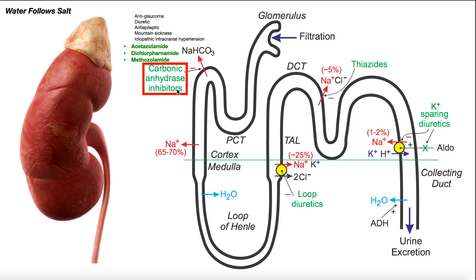The first class of drugs we'll look at are the carbonic anhydrase inhibitors — drugs that inhibit the enzyme carbonic anhydrase. Carbonic anhydrase ultimately allows bicarbonate to be reabsorbed into the blood. If you see one of these arrows moving from within the tubule out, that means that substance is being reabsorbed from the tubule into the blood and won't be excreted. Normally, carbonic anhydrase allows the reabsorption of both sodium ions and bicarbonate (HCO3) from the tubules into the blood.